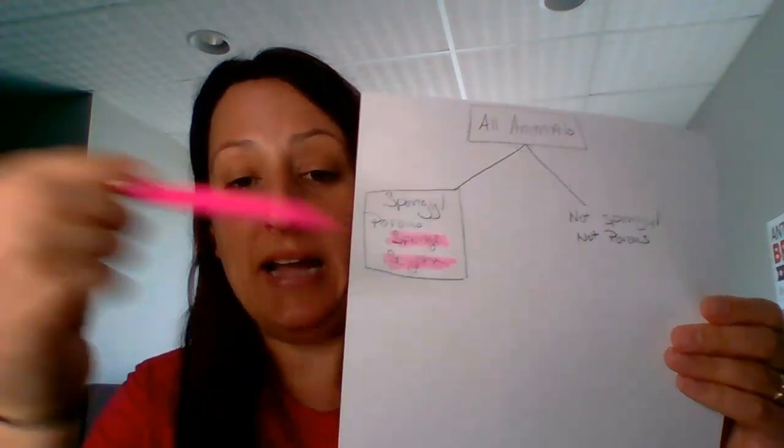Under spongy/porous, I'm going to list two: the sponge and Scypha. I'll box that in and highlight it. The lab book tells you that grouping is not going to be broken down any farther - so we're actually done with that side. When you get to a final box, you can highlight it. Take sponge and Scypha - you are finished with those.